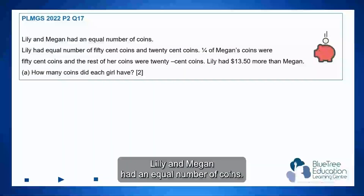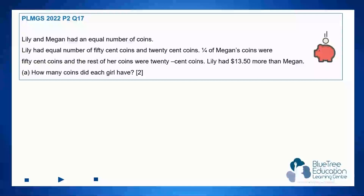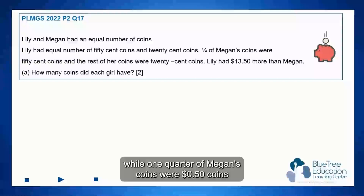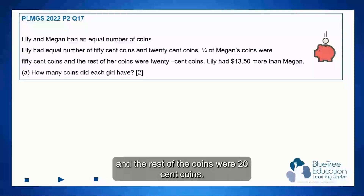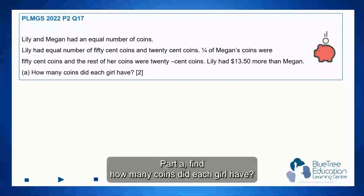Lily and Megan had an equal number of coins. Lily had an equal number of 50 cent coins and 20 cent coins, while one quarter of Megan's coins were 50 cent coins and the rest of her coins were 20 cent coins. So Lily had $13.50 more than Megan. Part A: find how many coins did each girl have.